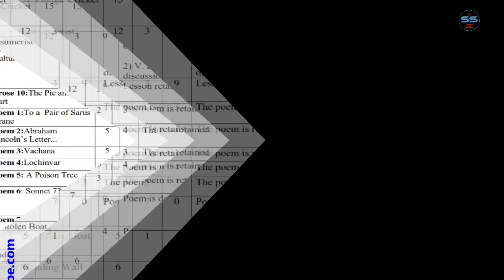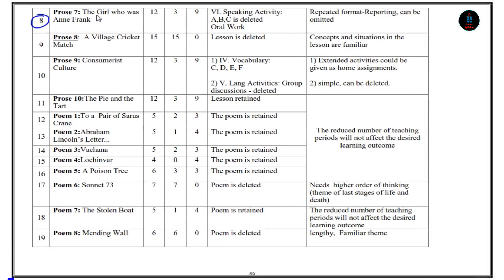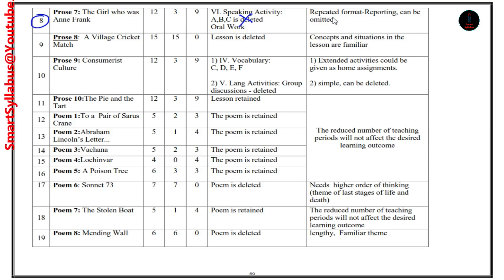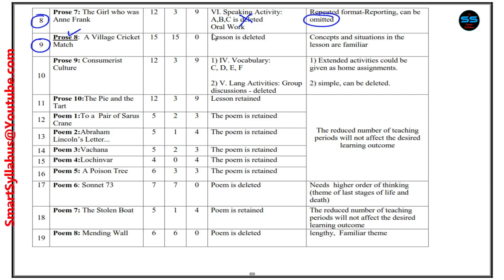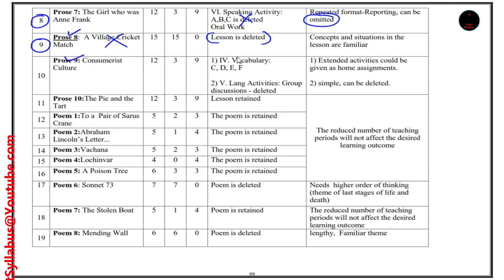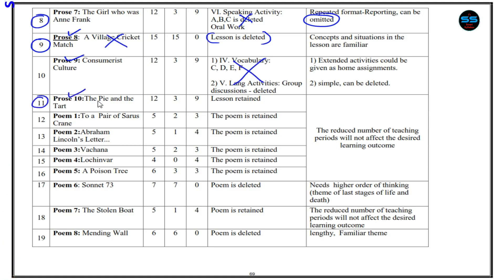For Prose 6 — 'The Eyes Are Not Here' — vocabulary parts A, B, and C under Roman numeral IV are omitted. For Prose 7 — 'The Girl Who Was Anne Frank' — speaking activity ABC under Roman numeral VI and the oral book are deleted, as it is a repeated format. Prose 8 — 'A Village Cricket Match' — this entire topic is deleted; you are not going to study this lesson this year. For Prose 9, vocabulary C, D, E, F and language activities like group discussions are deleted. Prose 10 — 'The Pie and the Tart' — is retained with no content changes; only the number of periods is reduced.